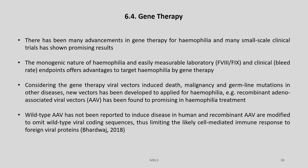To overcome all these disadvantages, advancements have been made in the area of gene therapy. There have been many advancements in gene therapy for haemophilia and many small-scale clinical trials have shown promising results. The monogenic nature of haemophilia, with easily measurable laboratory markers — factor 8, factor 9 — and clinical bleed rate endpoints, offer advantages for targeting haemophilia by gene therapy. Recombinant adeno-associated viral vectors have been found to be promising in haemophilia treatment, as wild-type AAV has not been reported to induce disease in humans.